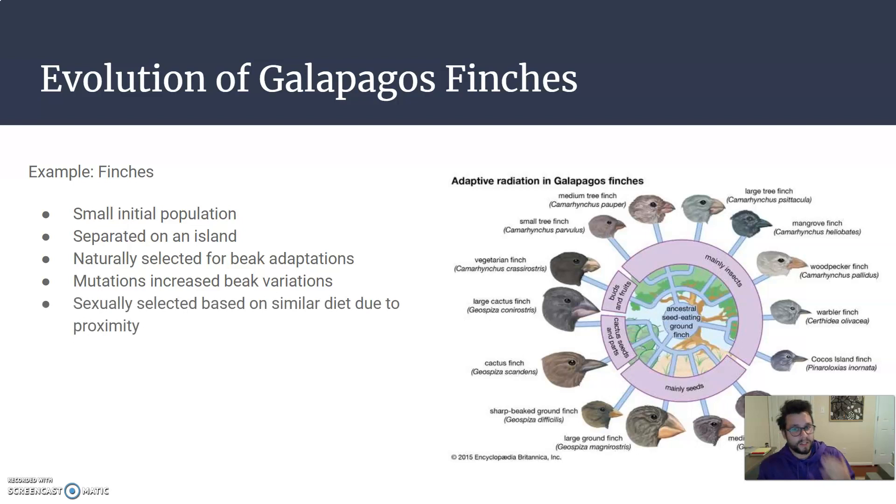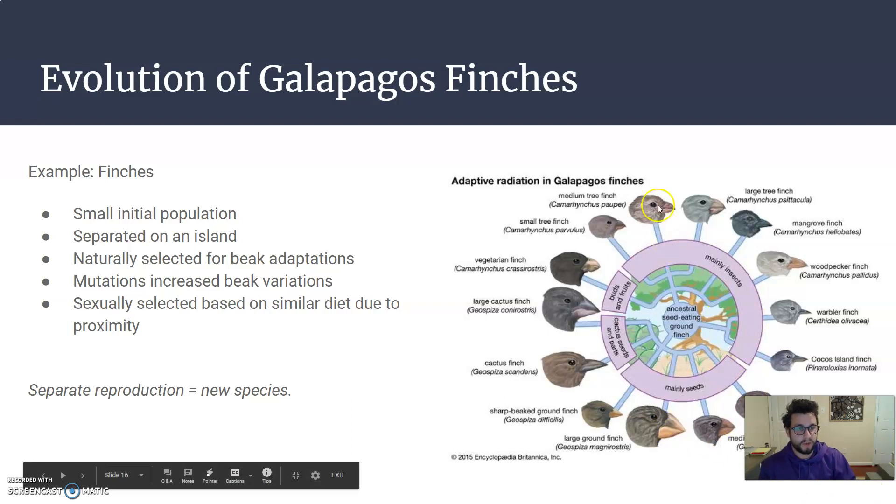Eventually mutations could help add changes to the beaks and feathers and other things. And they would sexually select each other based on, they were probably closer to the ones that they were eating the same ones with. So by now not reproducing together, since this bird, this finch, and this finch don't reproduce together anymore, they are now considered different species.